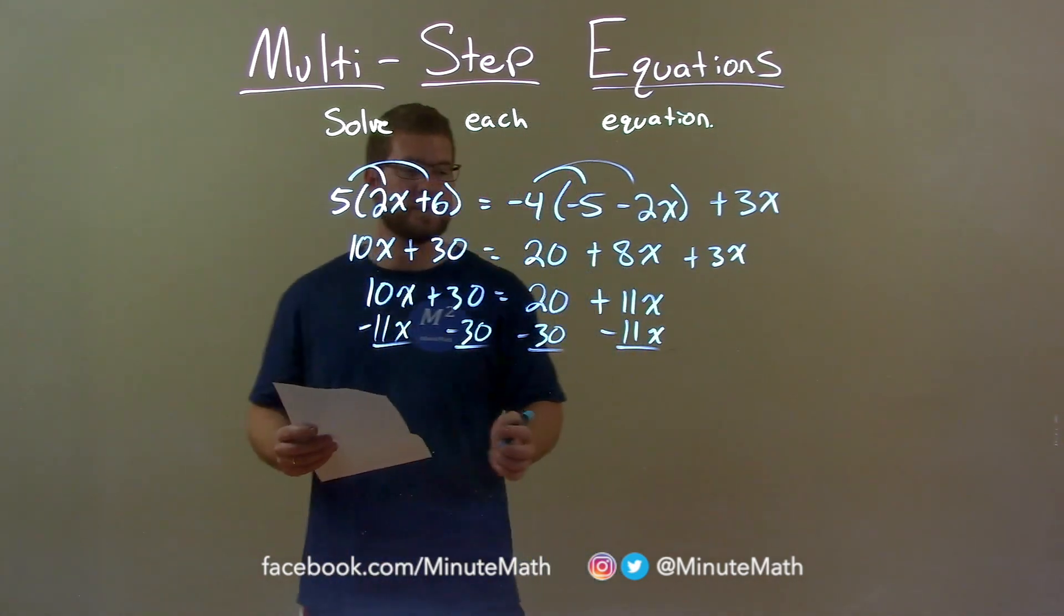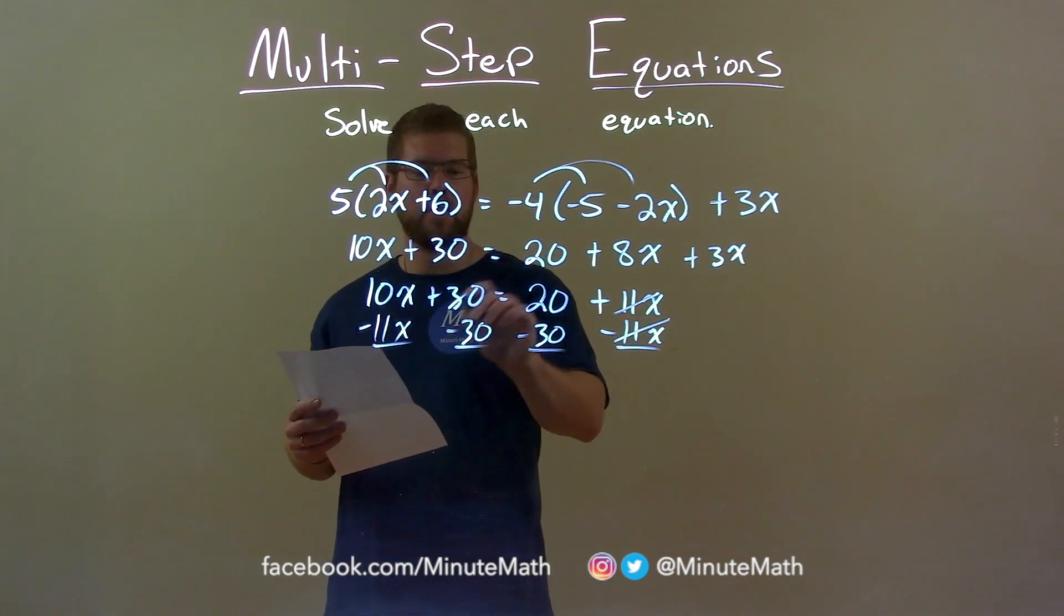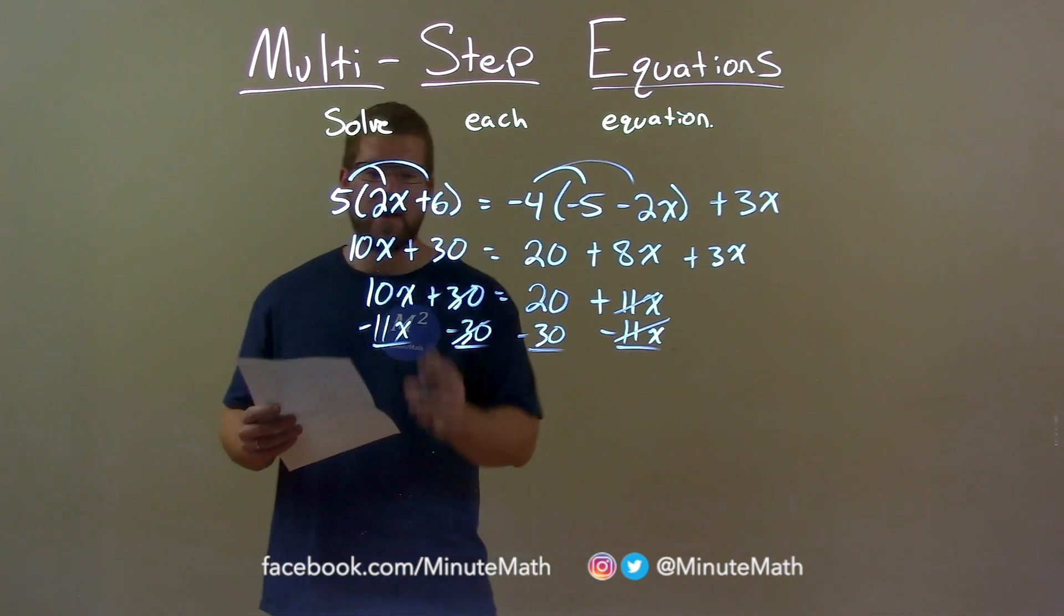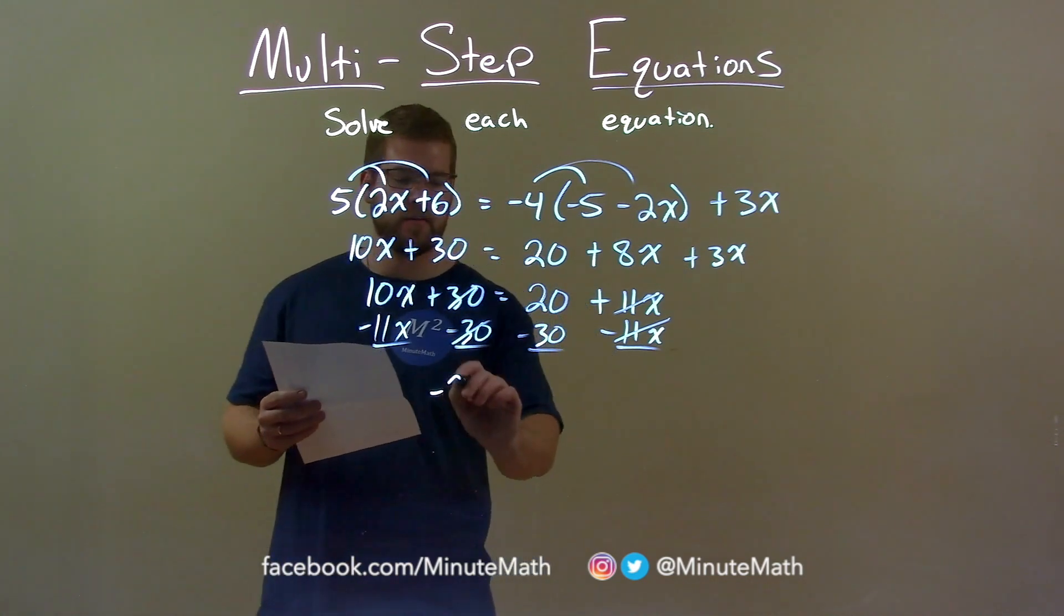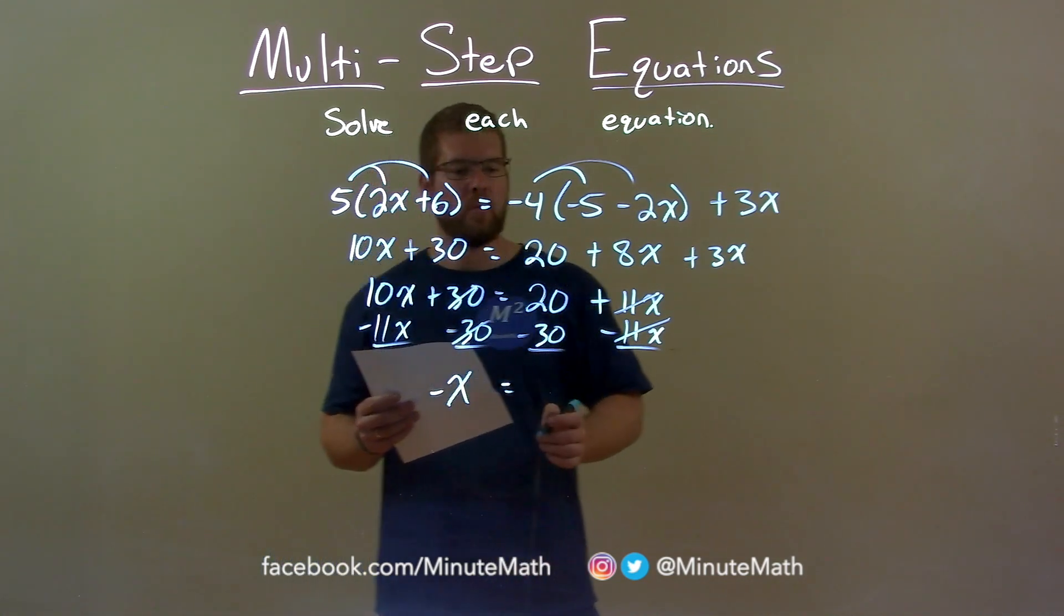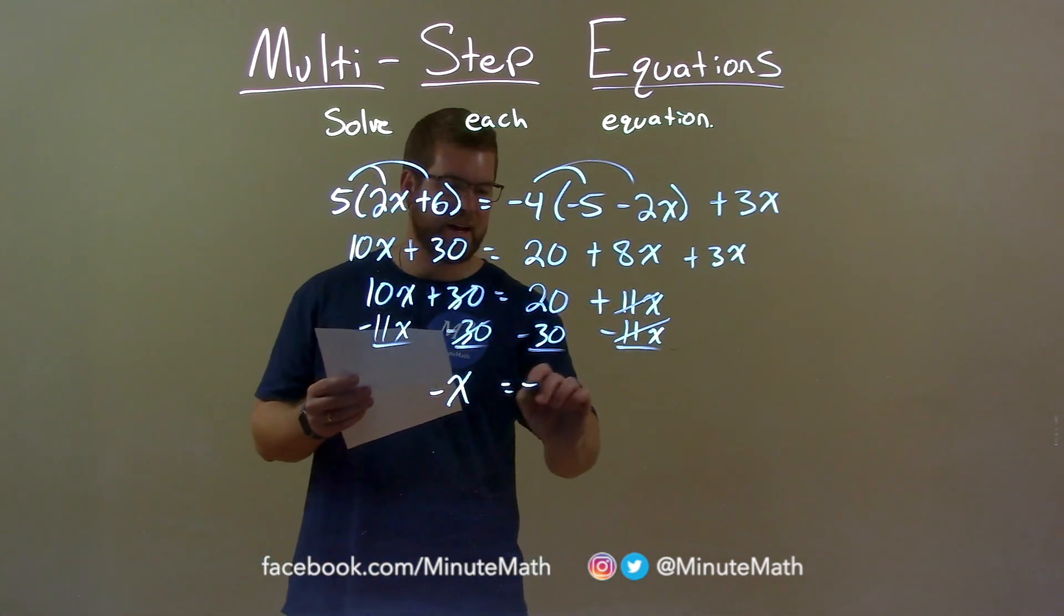We're combining our like terms. 11x cancels on the right and 30s cancel on the left. 10x minus 11x is negative x. And on the right, 20 minus 30 is negative 10.